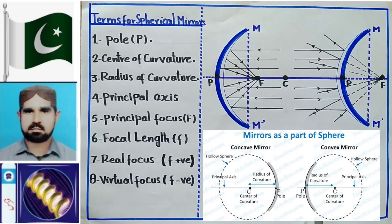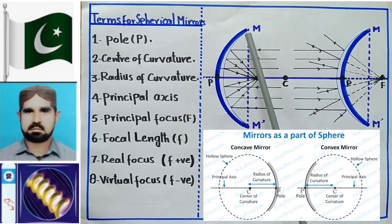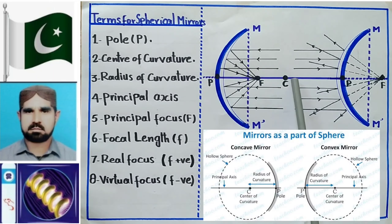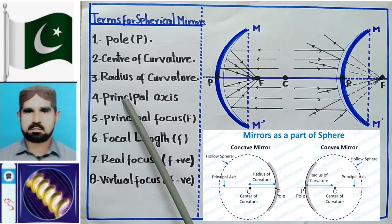अब radius of curvature है। Center of curvature का पता चल गया, pole का पता चल गया। हर एक circle या hollow sphere का एक radius होता है। चूंकि यह spherical mirror sphere का हिस्सा है, उस sphere का radius भी होगा। वो ही radius spherical mirror का भी होता है। The distance between the center and pole is called radius of curvature। P और C का जो total distance है इसको radius of curvature कहते हैं और capital R से जाहर करते हैं।